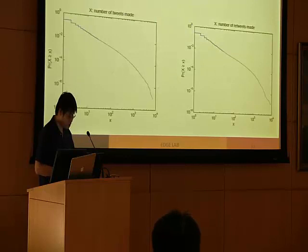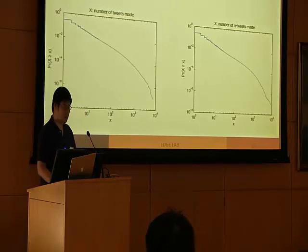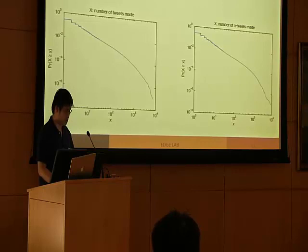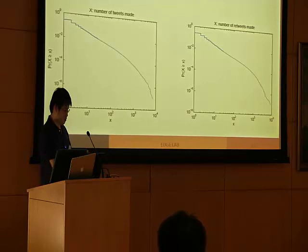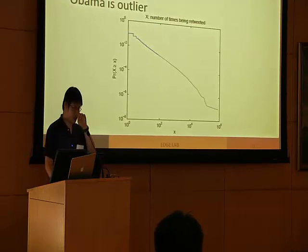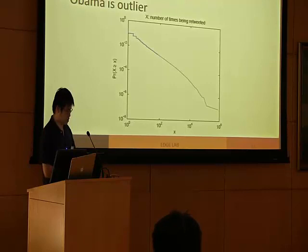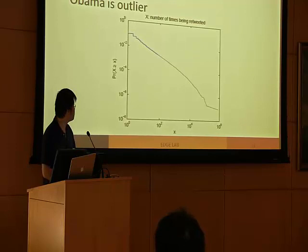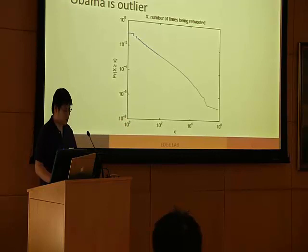Turning to some basic properties of our data: in terms of tweeting activity per user, we find the data to be highly skewed, with significant activity spanning multiple decades. Even more interesting, retweet popularity is even more skewed, showing even more significant activity over multiple decades. We also see one outlier — Obama — with a small artifact at the end of the line because Obama is orders of magnitude more popular than others.